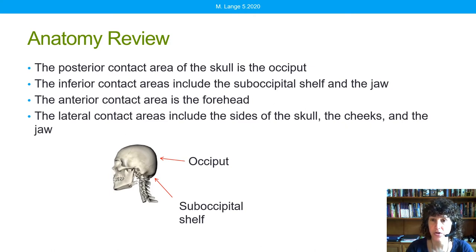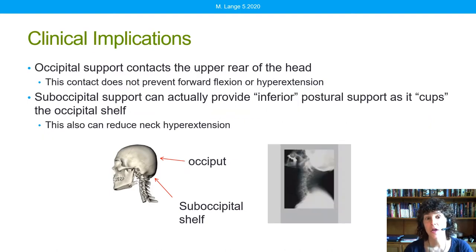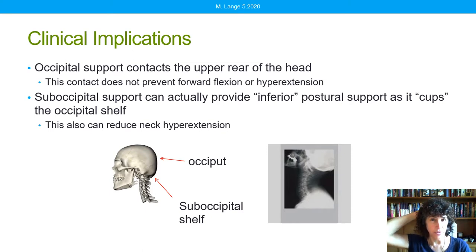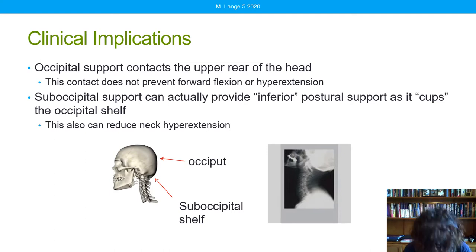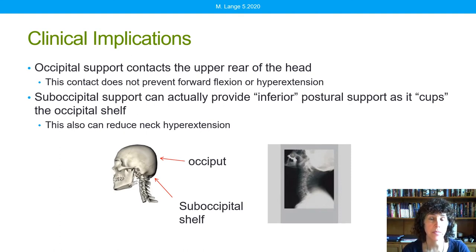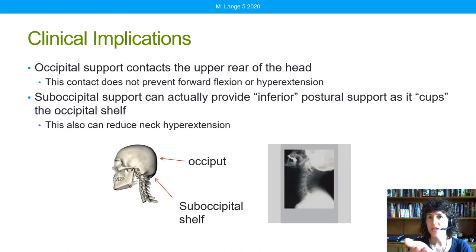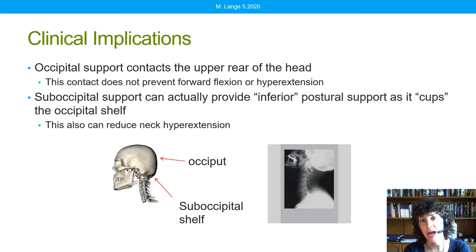You can see here in this picture where the occiput is in relation to the suboccipital shelf. If we put support at the occiput it contacts the upper rear of the head, but there's really nothing about that pad that's going to prevent forward flexion of the head or collapse into hyperextension. Whereas with the suboccipital shelf, we can provide support in this area that can actually cup the base of the skull so that we have a support surface. That can be really helpful in helping the client keep their head upright, and it can also reduce neck hyperextension.